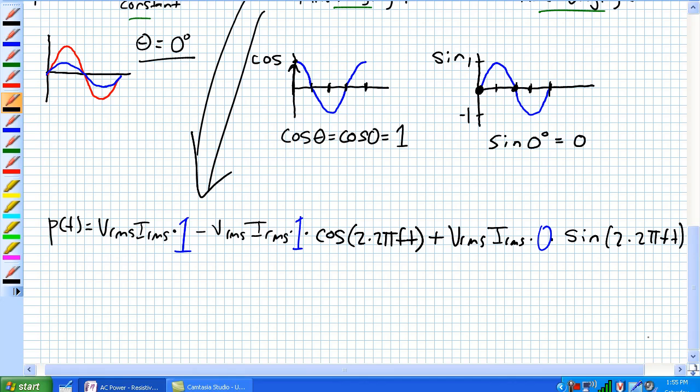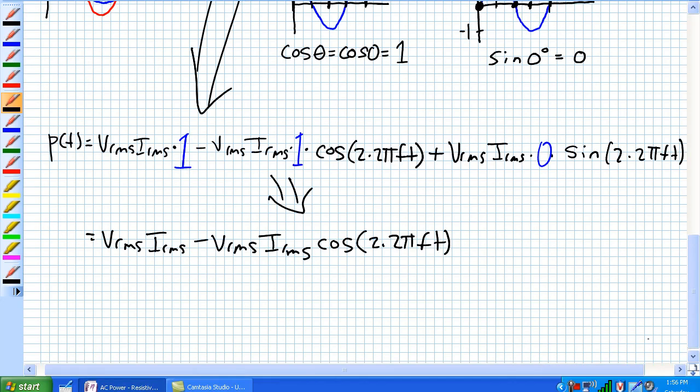And we get something that looks like this which can be further simplified to something that looks like this. Much simpler now. So we're going to use kind of our techniques we did before to describe this thing. This guy, that's a constant. This right here is a time varying waveform.